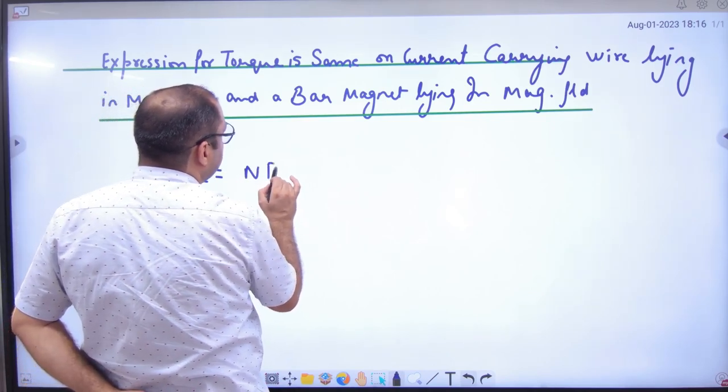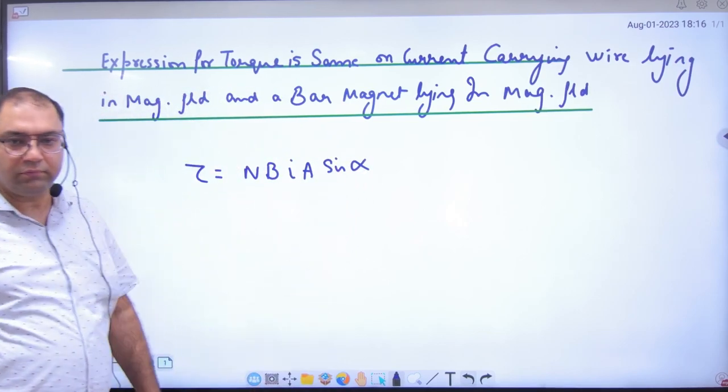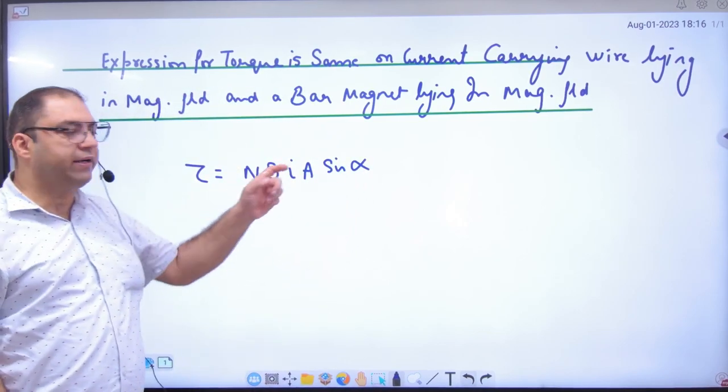N, B, current, area, sin alpha, where alpha was angle between B vector and area vector.